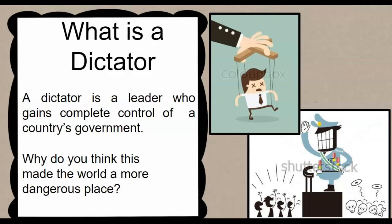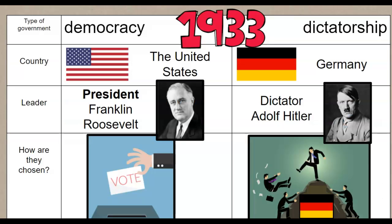Think about how this made the world a more dangerous place — having dictators suddenly pop up in countries with complete control over the whole country, wanting to do anything to build power and protect themselves. They wanted to control every aspect of the daily lives of the people in their country. Looking at the difference between our democracy versus a dictatorship, the leader that popped up — as most of you know — was Adolf Hitler.